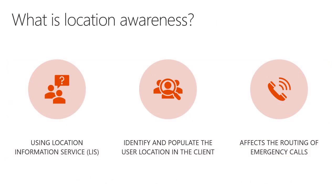Location awareness refers to LIS, the location information service. LIS is used to identify and populate the user's location within the Teams client. The LIS database affects the routing of emergency calls inside the US, allowing us to dynamically locate a user and automatically route the call to the correct PSAP based on the validated location defined in the LIS database.